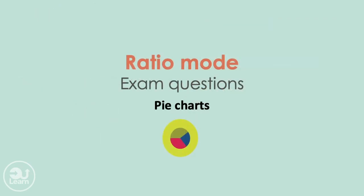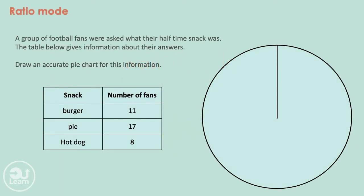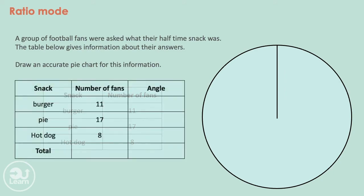We have pie charts that can be solved with this mode. A group of football fans were asked what their half term snack was. The table below gives information about the answers. Draw an accurate pie chart for this information. First we need to understand that a complete turnaround of pie chart is 360 degrees, which also represents the total frequency. The total frequency can be calculated by adding 11, 17 and 8 together, which gives us the final answer of 36.